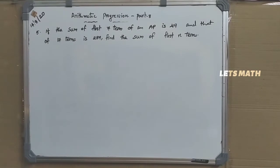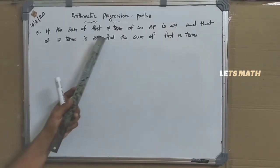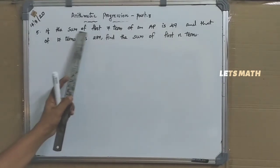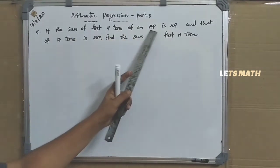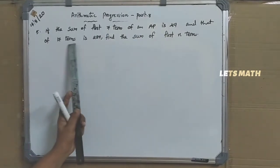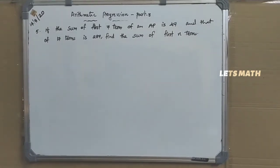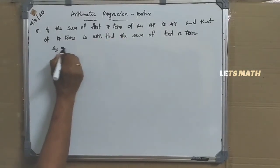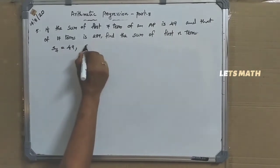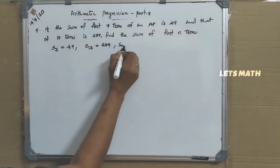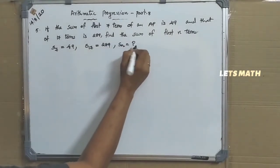Next question: if the sum of first 7 terms of an AP is 49 and that of 17 terms is 289, find the sum of first N terms. So S7 equal to 49 and S17 equal to 289. It is asked to find SN.